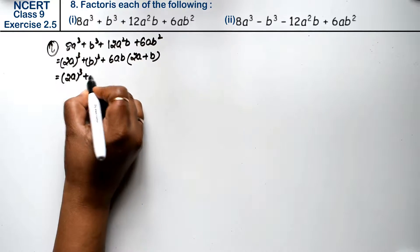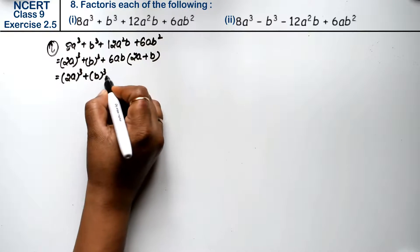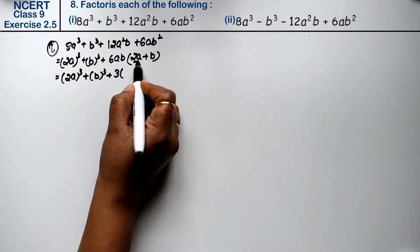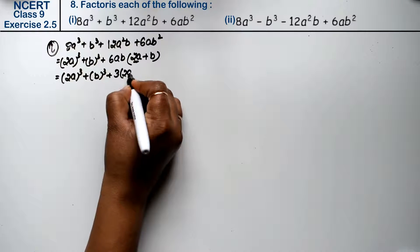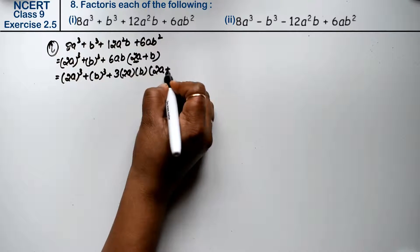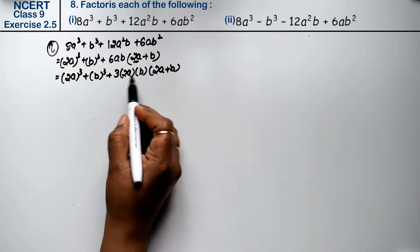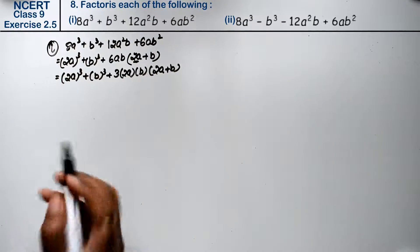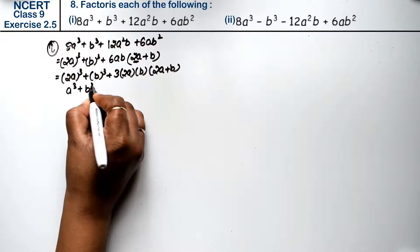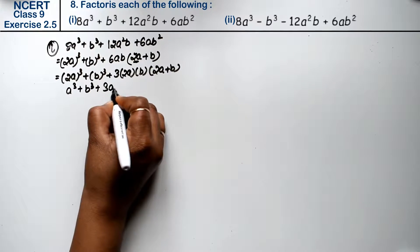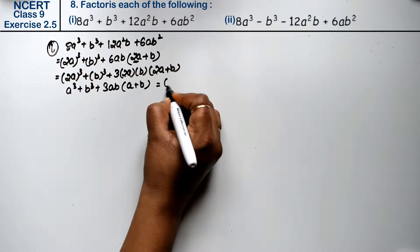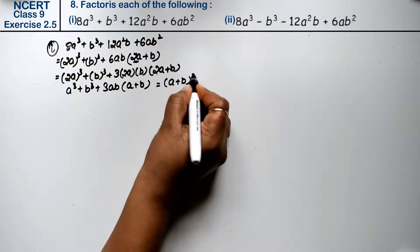2a's whole cube plus b's whole cube. So what is the formula? 3 into a — look at 2a — so 2a into b, and 2a plus b. So we will open it and learn. This formula was: a cube plus b cube plus 3ab into (a plus b) equals (a plus b) whole cube.